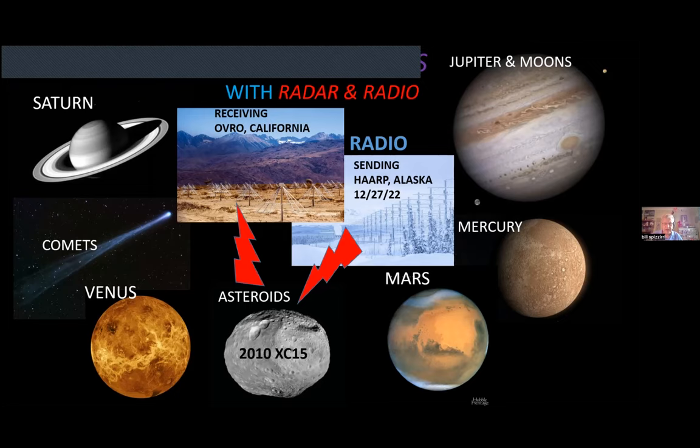This was done very recently — just this past December — when radio waves were sent from a series of antennas in Alaska. They hit asteroid 2010 XC15, bounced back, and were received by an antenna in California. They were able to measure the exact distance to that asteroid at that time. Radar and radio work well for nearby objects in the solar system — that's part of that first rung on the cosmic distance ladder.